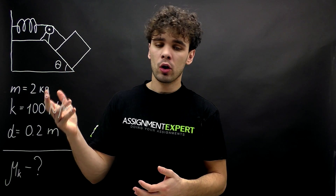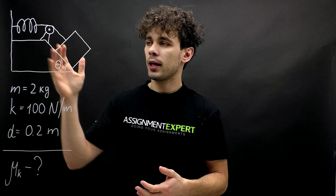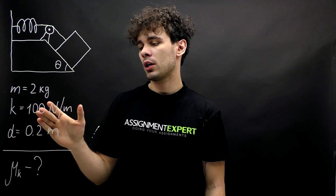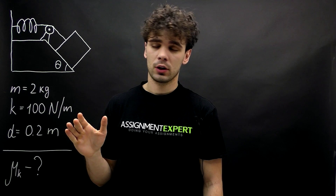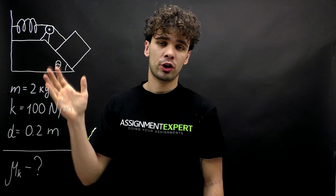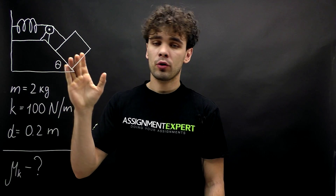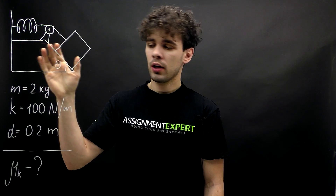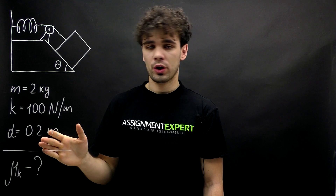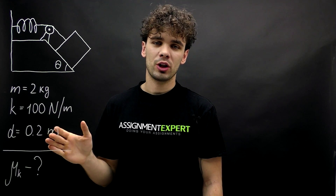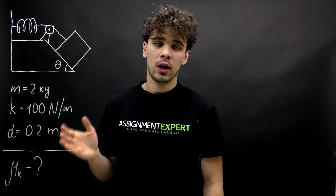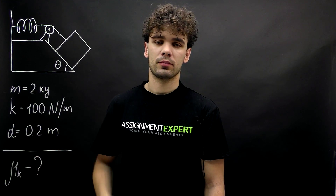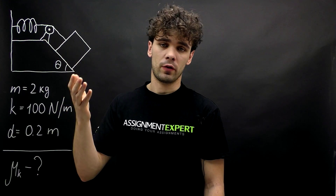We have a 2 kg block on an incline surface and it is connected to a light spring with stiffness 100 newtons per meter. The pulley is frictionless and the block remains at rest until the spring is unstretched. Then it moves down 20 centimeters, or 0.2 meters, and rests again. Our task is to find the coefficient of kinetic friction between the block and the surface.